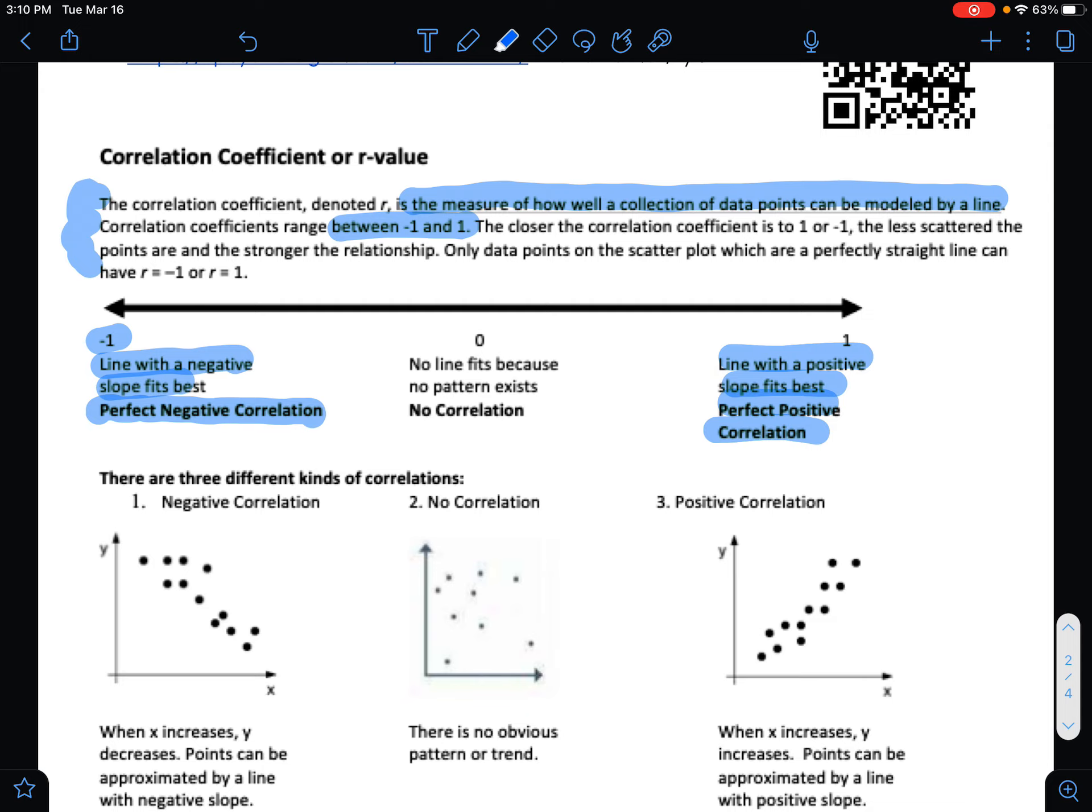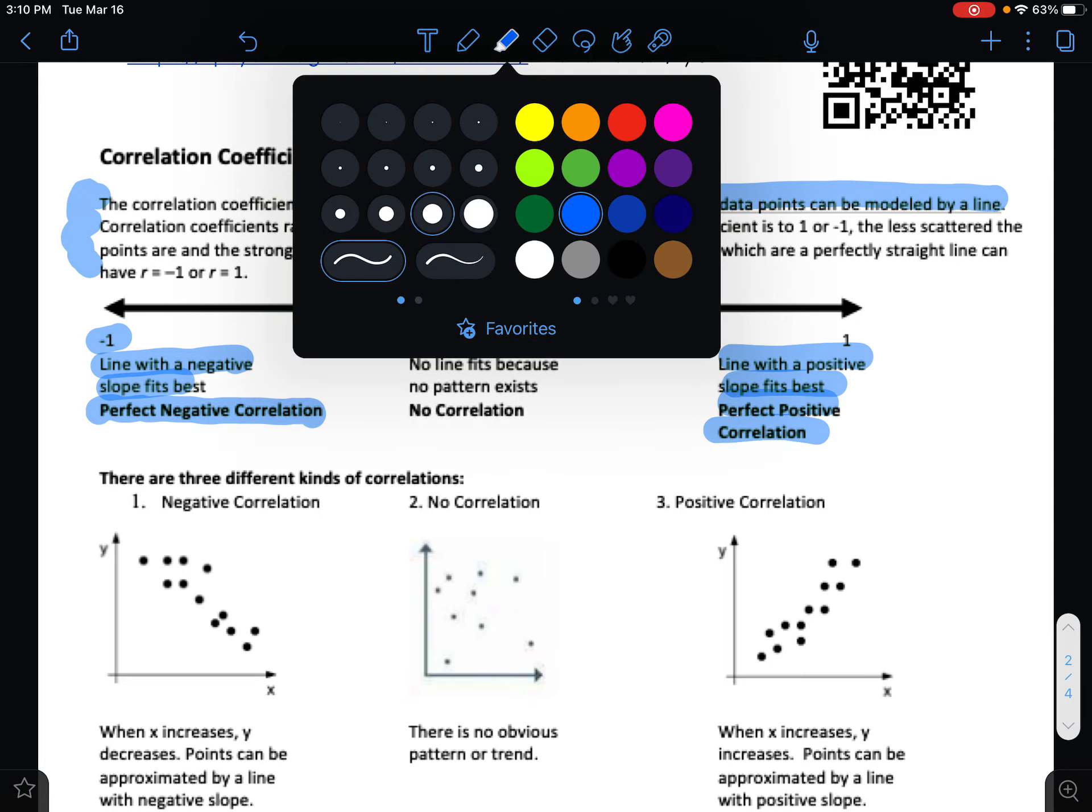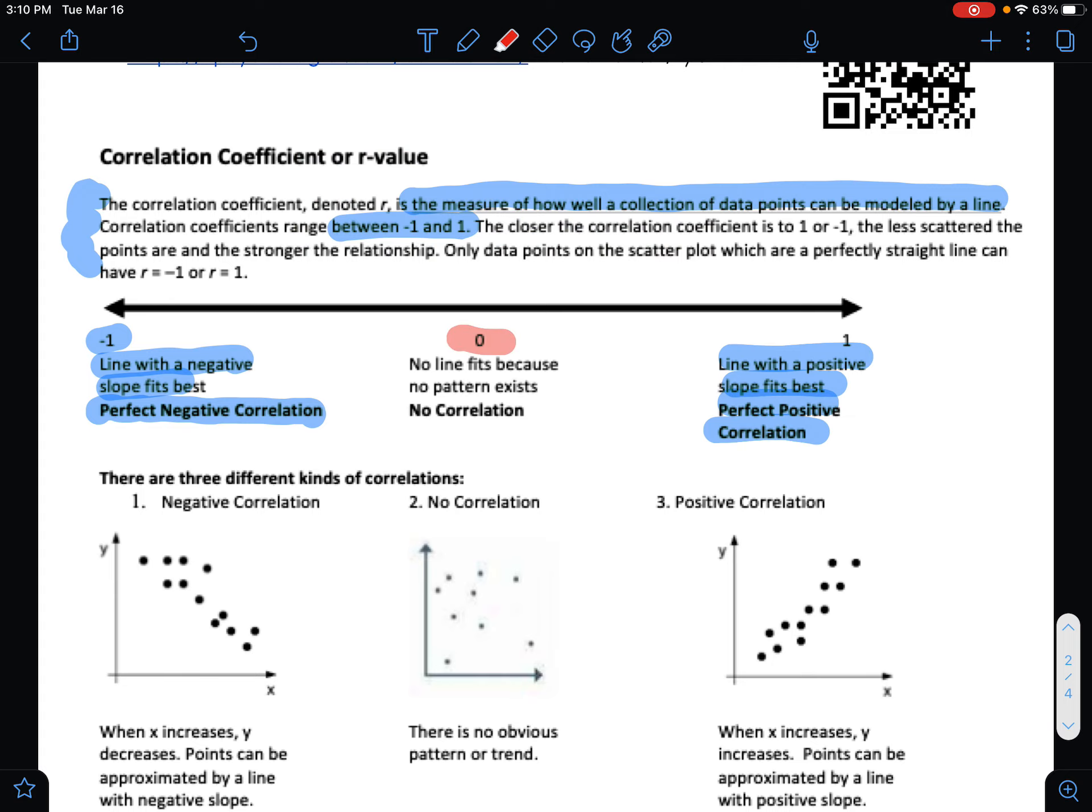If you have a perfect positive sloping line where all the points line up on the line and it's in a positive sloping direction, then that is going to be a correlation coefficient of positive 1. So the closer it is to negative 1 or positive 1, the more linear it is. The only difference between negative 1 and 1 is the slope direction. If there's really no pattern at all, that's when you have a correlation coefficient close to 0.